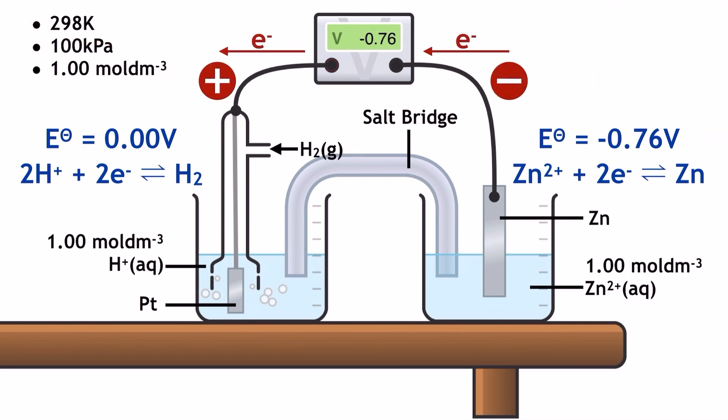The zinc half cell is clearly labelled as the anode this time, which is different from the previous example, as we see a different direction of flow of electrons. The negative value of the zinc standard electrode potential tells us that the zinc position of equilibrium is further to the left than the hydrogen redox system, meaning that zinc has a greater tendency to donate electrons.